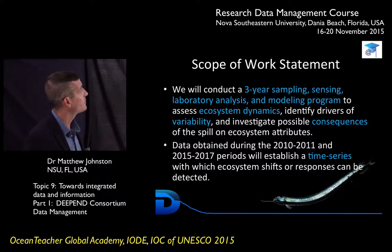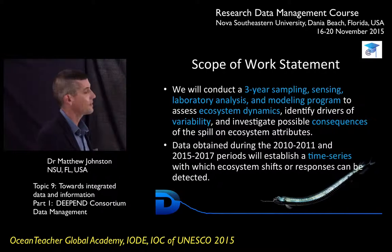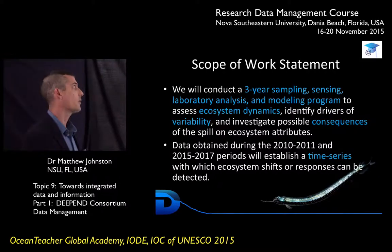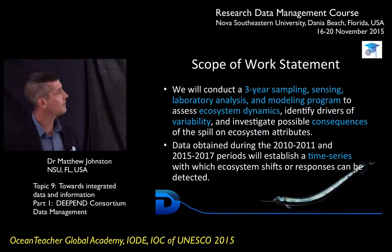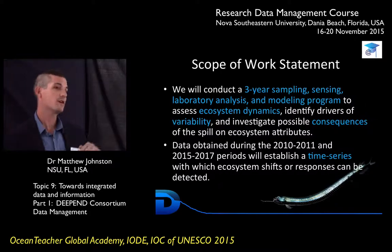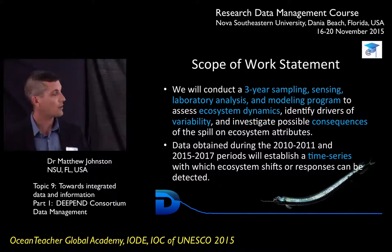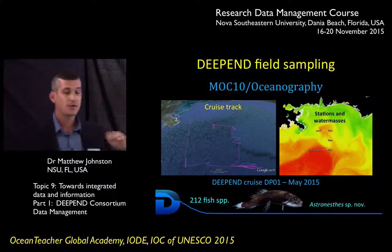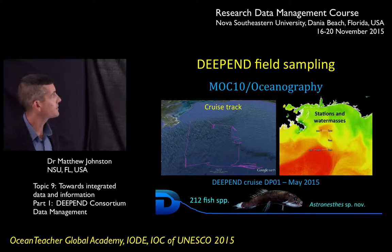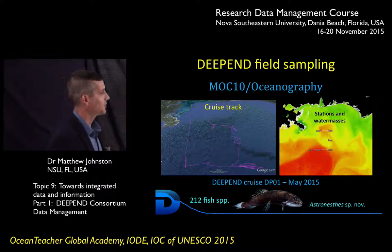This is the scope of work statement. This is a three-year project that consists of remote sensing, laboratory analysis, modeling, and ecosystem dynamics. We're trying to determine the effects of the oil spill immediately afterwards and also five to ten years into the future, and we're also going to be doing some backcasting to see what the ecosystem was like before the spill. Basically, we're collecting baseline data in the mesopelagic depths and also some epipelagic and very deep waters far from shore.